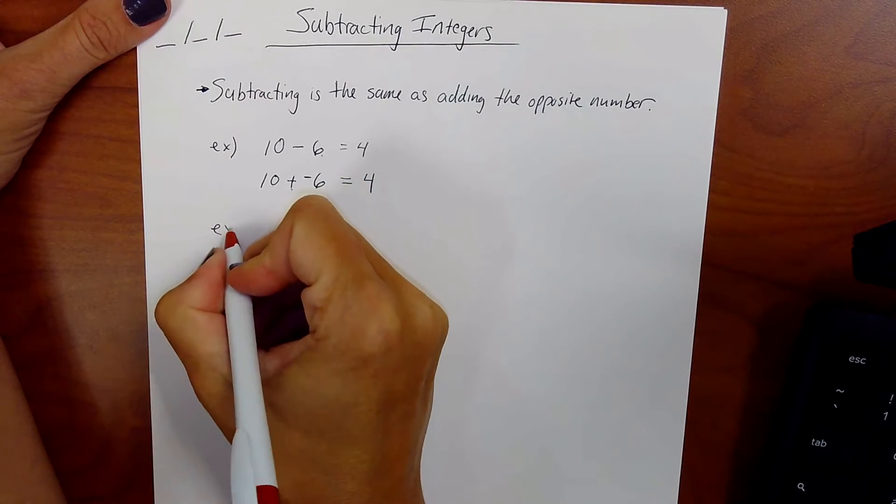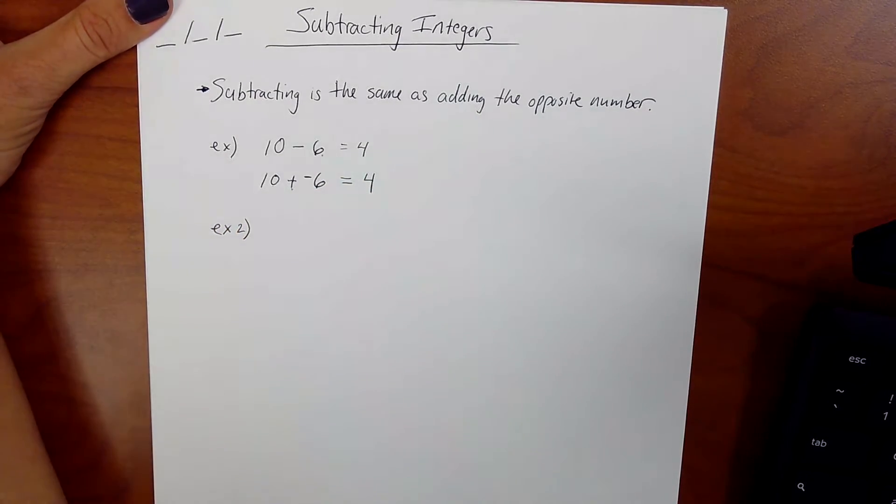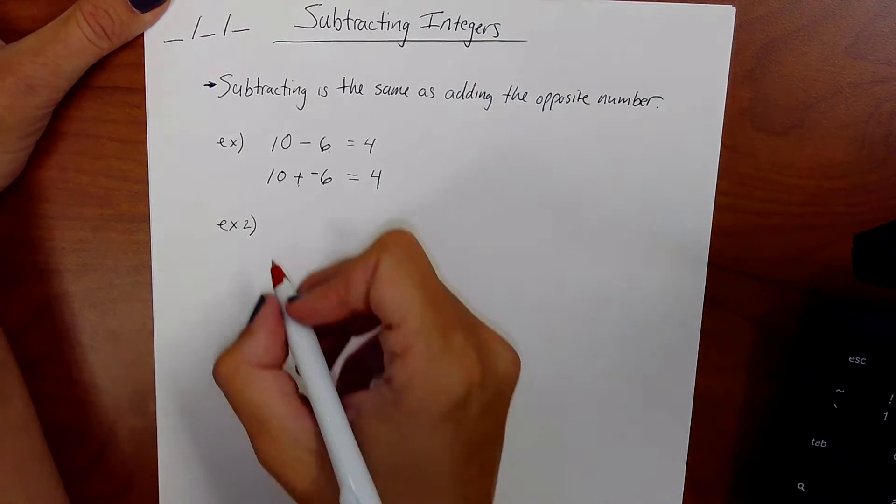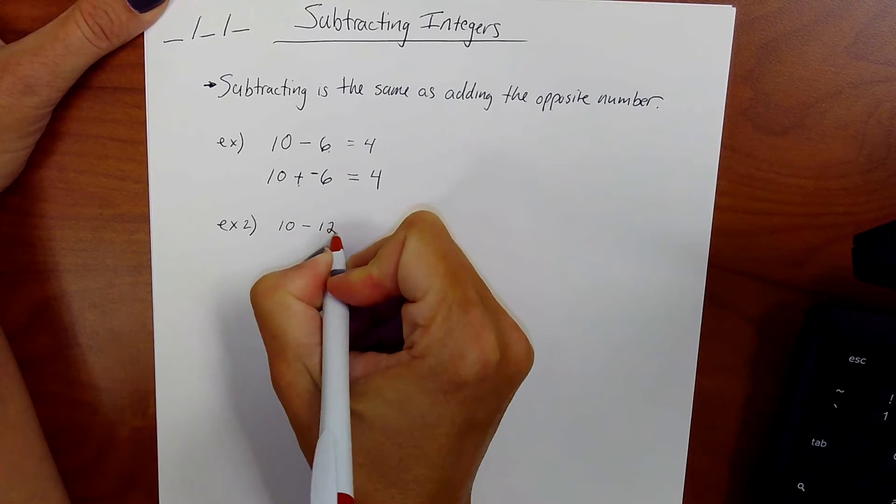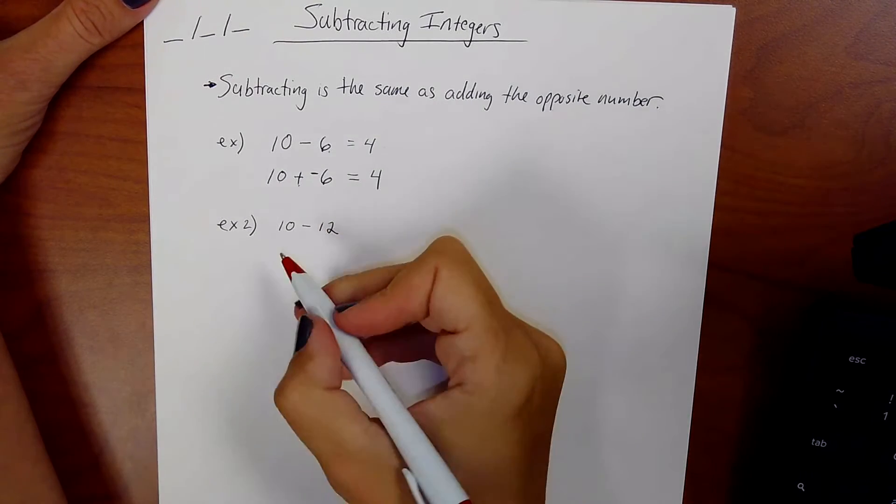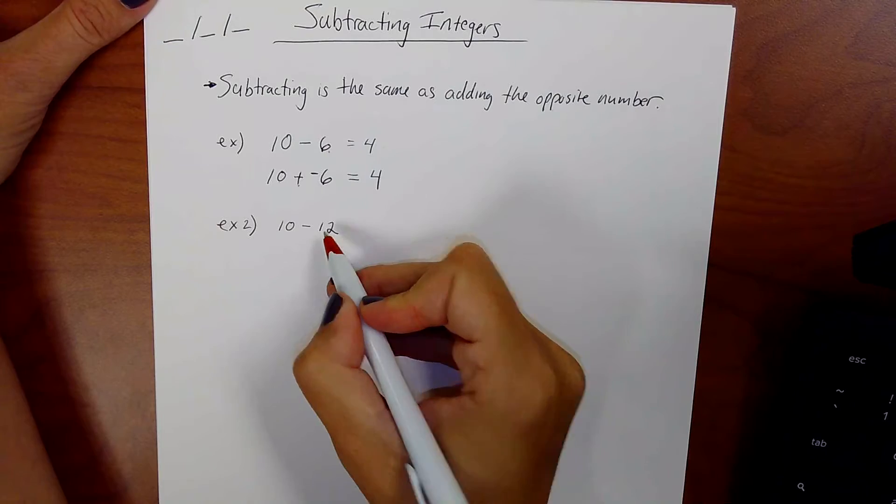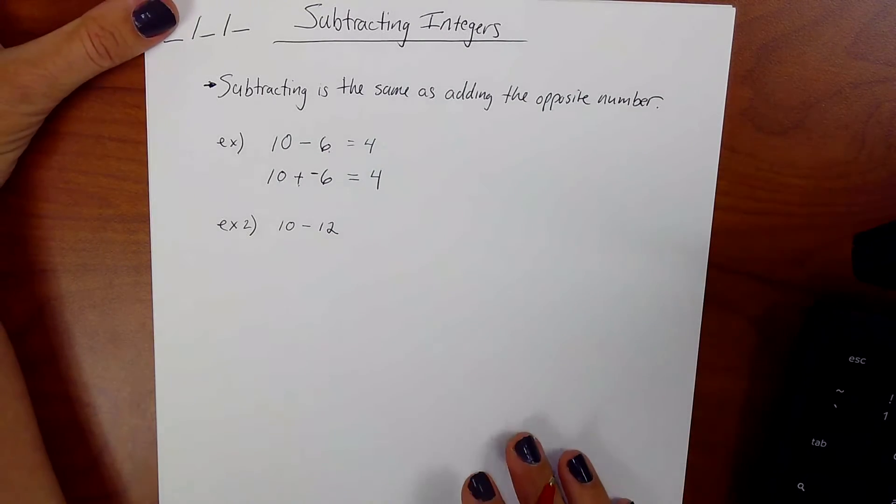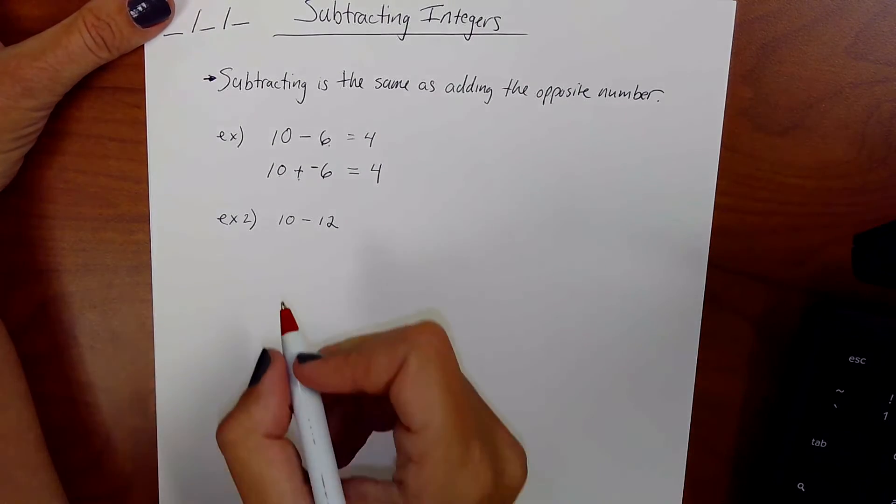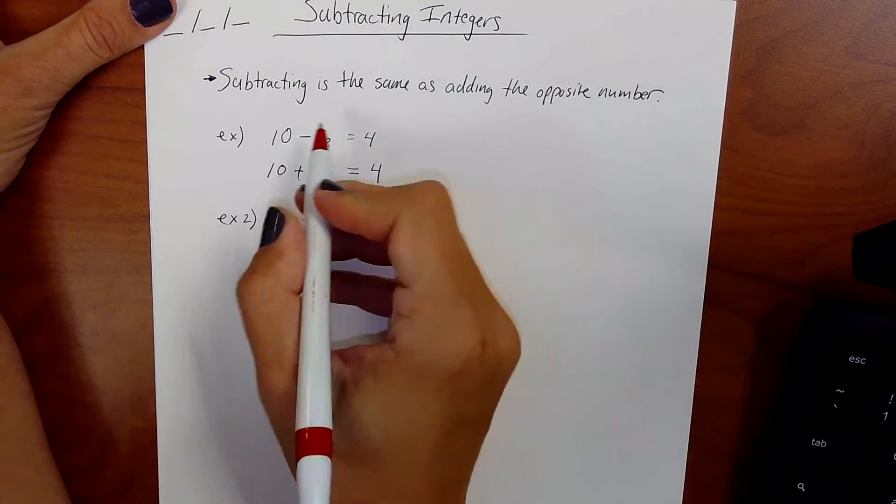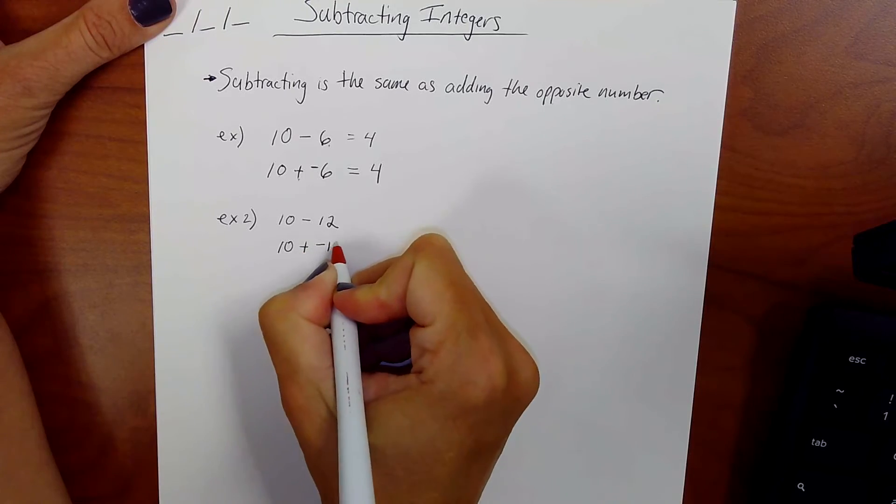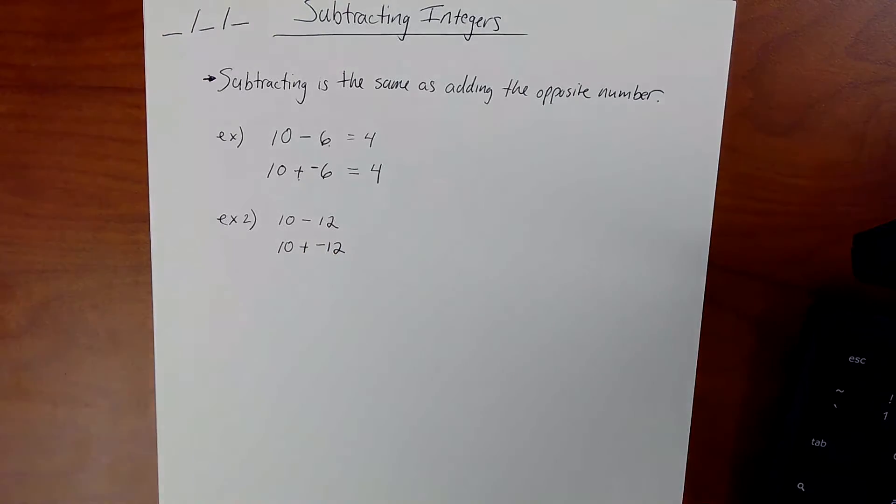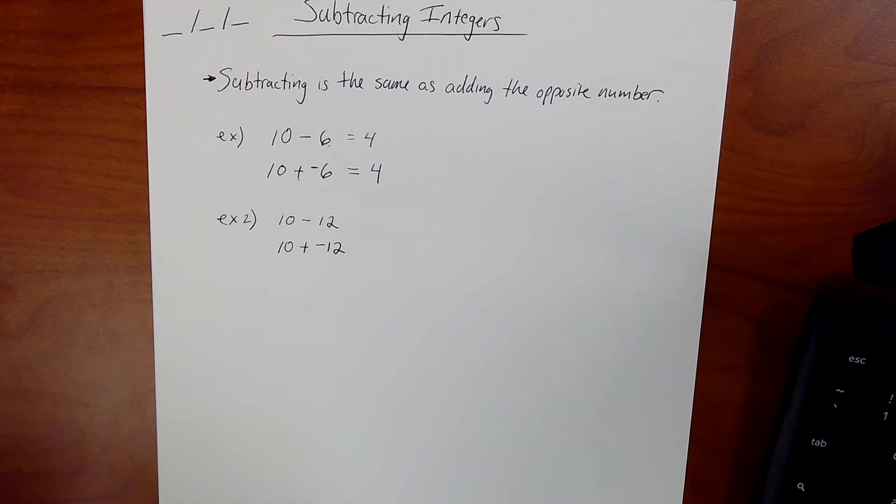But let's say the problem was a little more difficult. Like 10 minus 12. Now this is different. You can't have 10 things and take away 12 things. So the easiest thing to do here is to, same rule, we're going to change the subtraction into adding the opposite of that second number. So now we have 10 plus a negative 12.